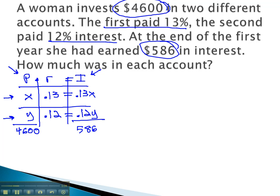That completes our table, and just as before, we can get an equation from the last column. .13x, the interest from the first account, plus .12y, the interest in the second account, equals 586, the total amount of interest.